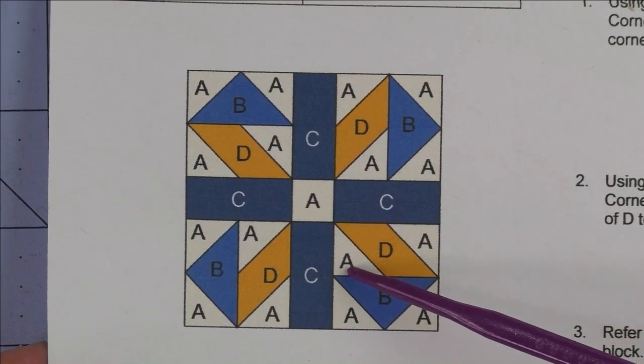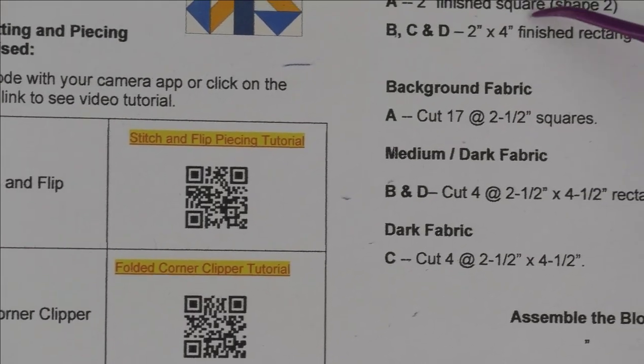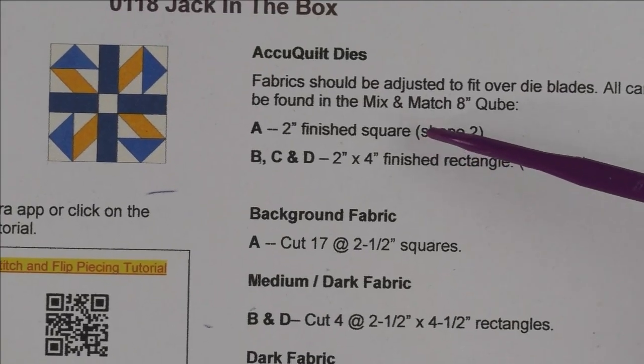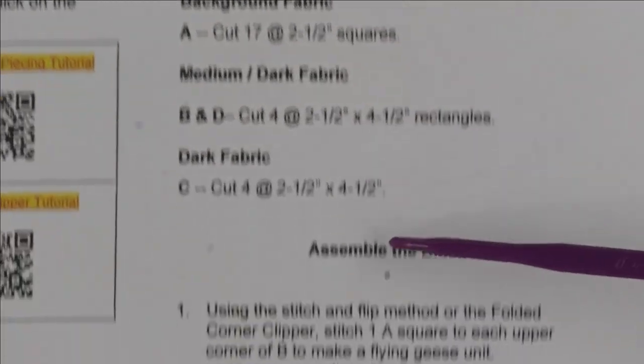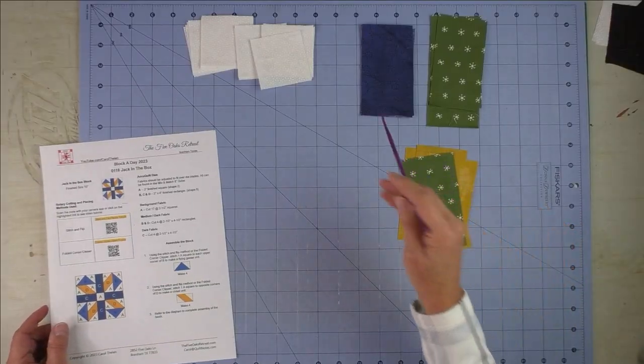Here is the diagram. The cutting for this is really easy. Here's the cutting instructions and the two dies you can use for AccuQuilt, and then some instructions for piecing the block.